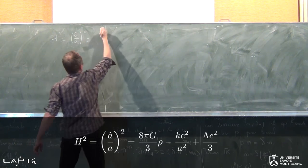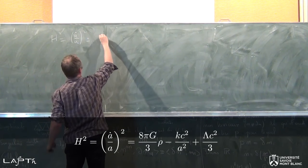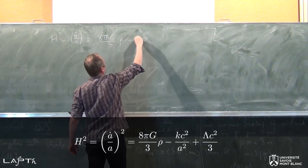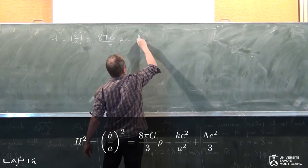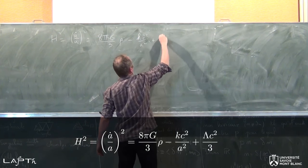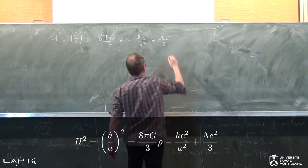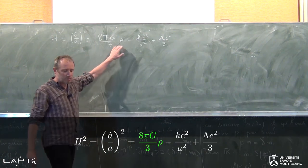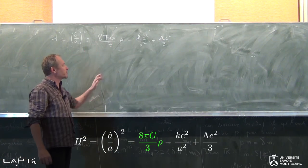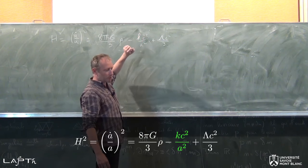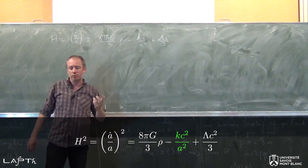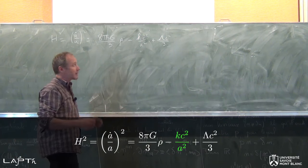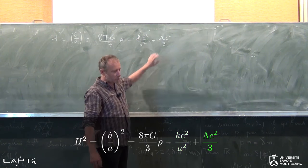La première des équations de Friedman-Lemaître nous dit qu'A point carré sur A², c'est égal à 8πG sur 3 fois ρ, moins kc² sur A², plus λc² sur 3. Dans cette équation, ρ désigne la densité des différentes composantes — la matière et le rayonnement essentiellement. Ce terme vient de la courbure de l'espace-temps. k peut valoir 0, +1 ou −1, suivant que l'univers est courbé dans un sens ou dans l'autre, ou qu'il est plat si k est égal à 0. Et ce terme est le terme de constante cosmologique.